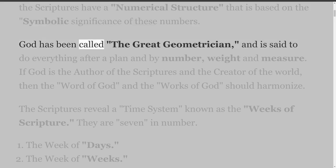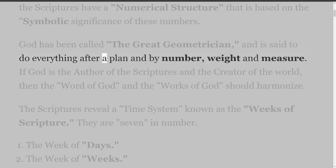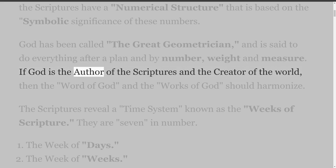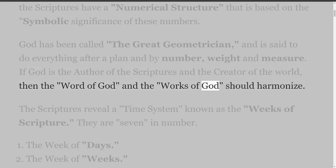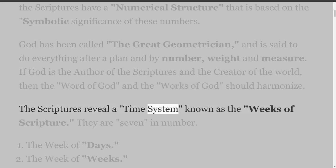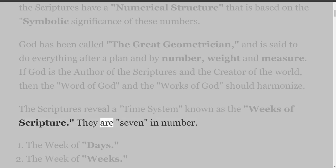God has been called the Great Geometrician and is said to do everything after a plan and by number, weight and measure. However, if God is the author of the Scriptures and the creator of the world, then the Word of God and the works of God should harmonize. The Scriptures reveal a time system known as the Weeks of Scripture. They are seven in number.